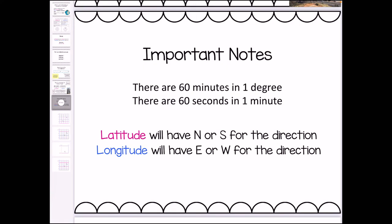Some important notes: there are 60 minutes in one degree and there are 60 seconds in one minute. That is important for when we are going to be working out the seconds, because the degrees and minutes are easy — those are given on the map — but the seconds we always have to work out. It's also important to remember that latitude will always have a north or south direction — in South Africa we always use south — and longitude will have east or west — in South Africa we always use east.